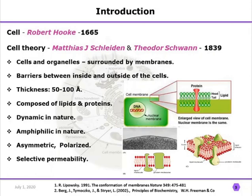Membranes are dynamic and amphiphilic in nature, meaning they have both hydrophilic and hydrophobic components. They are also asymmetric — the two sides of the membrane do not look the same. Membranes are polarized and have the special property called selective permeability, which is used in various cellular processes to control which ions or nutrients enter or exit the cell.